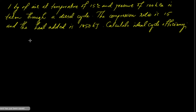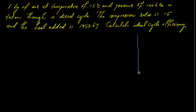This is a problem on the diesel cycle. One kilogram of air at a temperature of 15 degrees Celsius and pressure of 100 kilopascal is taken through a diesel cycle. The compression ratio is 15 and the heat added is 1850 kilojoules. We need to calculate the ideal cycle efficiency. Let us start with a sketch of our diesel cycle by drawing the PV diagram.